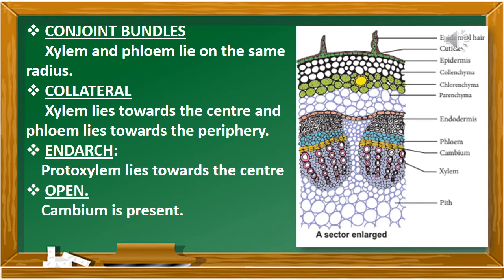Third, end-arch: in the picture, the protoxylem faces towards the center, the smaller-sized xylem facing towards the pith. Last, open: based on the presence of cambium. Look at the small yellow-colored layer between the phloem and xylem. If cambium is present, we call the bundle an open vascular bundle. So to describe the vascular bundle of a dicot stem: conjoined, collateral, end-arch, open.